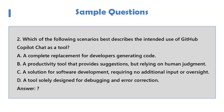Question 2: Which of the following scenarios best describes the intended use of GitHub Copilot Chat as a tool? A. A complete replacement for developers generating code. B. A productivity tool that provides suggestions, but relying on human judgment. C. A solution for software development requiring no additional input or oversight. D. A tool solely designed for debugging and error correction.